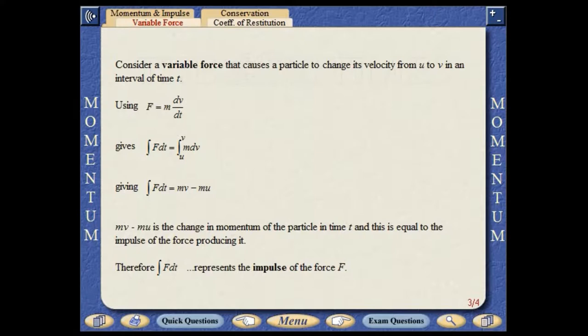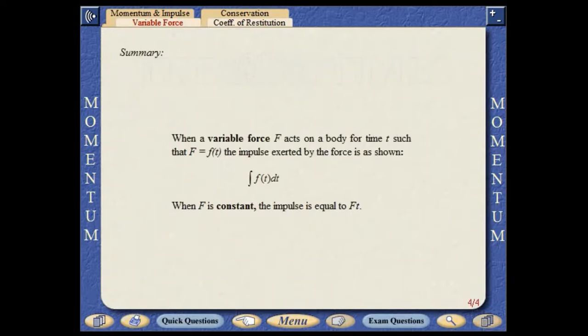Consider a variable force that causes a particle to change its velocity in an interval of time. The integral of the force with respect to time gives the impulse of the force. When a variable force F acts on a body for time t, such that F is a function of t, the impulse exerted by the force is as shown. When F is constant, the impulse is equal to F times t.